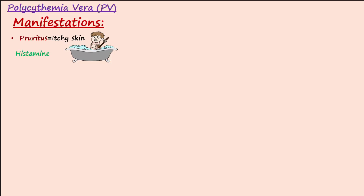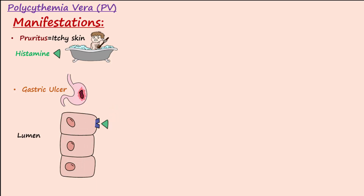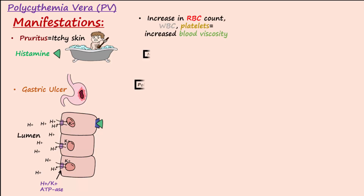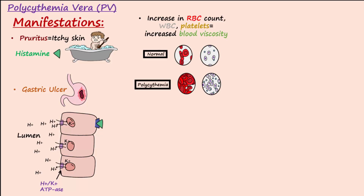A classic manifestation of polycythemia vera is pruritus, or itching skin, brought on by exposure to warm water. This is believed to be due to an increase in histamine or prostaglandin release that comes with the increased production of blood cells. The risk for ulcers also increases due to the added histamine stimulating the parietal cells to make more acid. Due to overproduction of red blood cells, white blood cells, and platelets, the blood becomes more viscous. With increased blood cells, more cells also die, increasing the production of uric acid and the risk for gout. Additionally, platelets can be activated and stick to one another to cause tiny blood clots in the extremities, leading to a condition called erythromelalgia and giving the skin a reddish color.